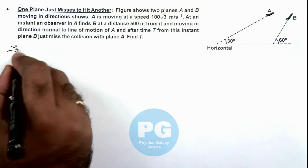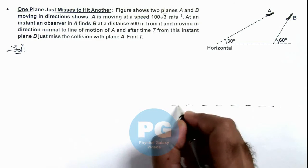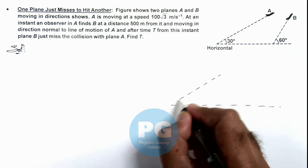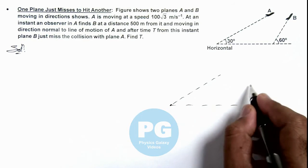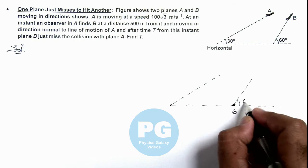So here in this situation, if we redraw the figure you can see: if this is the horizontal line, and this is the line along which plane A is moving, and this is the line along which plane B is moving. Say B is located here at an instant when this is 60 degrees.